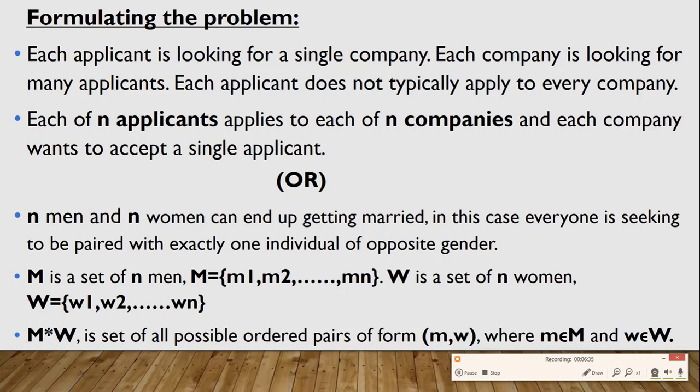So let us take another example where there are N men and N women who can end up getting married. In this case, everyone is seeking to be paired with exactly one individual of the opposite gender. Capital M is a set of N men and capital W is a set of N women. M cross W is the set of all possible ordered pairs (m, w) from the sets M and W.